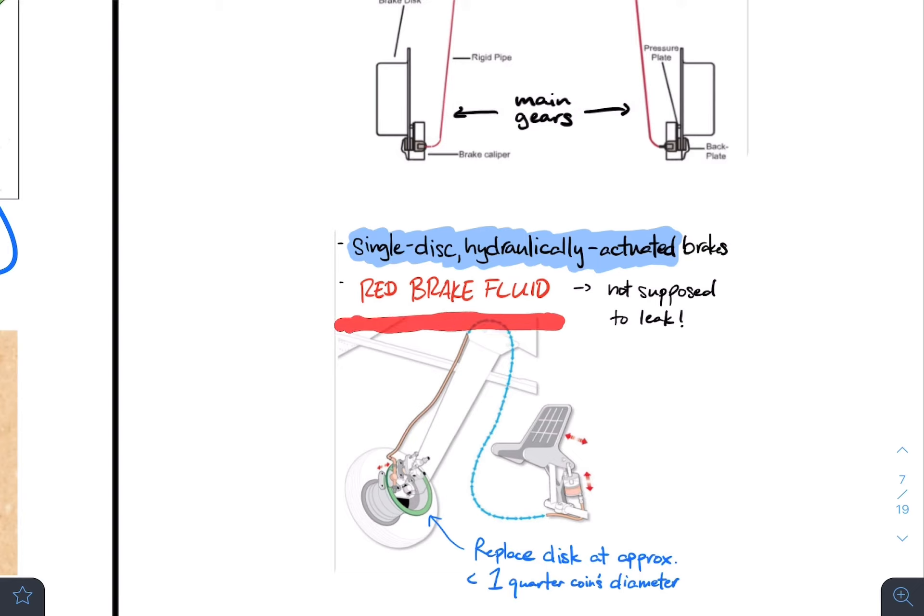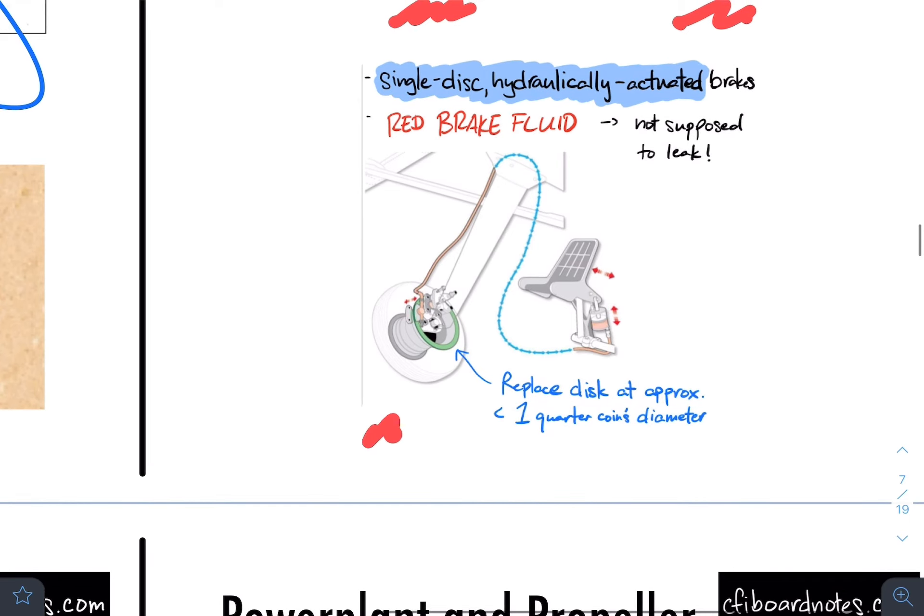And at no point are you supposed to see any kind of leak down on the bottom of the brakes, on the ground, or on the tire. If you see red brake fluid or any kind of red fluid anywhere, stop the flight. Make sure somebody checks that.